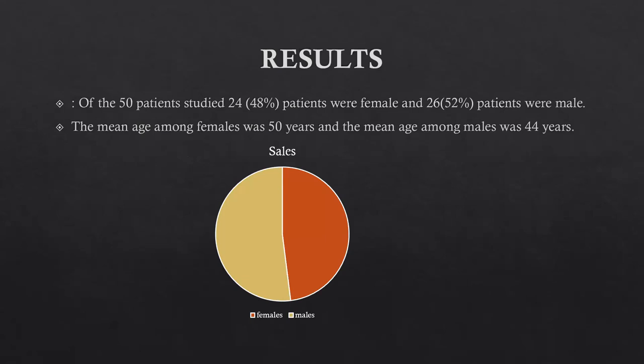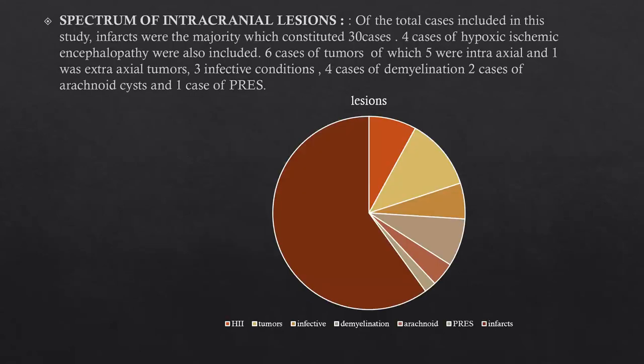Results. Of 50 patients studied, 24 patients (48%) were female and 26 (52%) were male. The mean age among females was 50 years and the mean age among males was 44 years. Spectrum of intracranial lesions: infarcts were the majority, constituting 30 cases; four cases of hypoxic ischemic encephalopathy; six cases of tumors (five intraaxial and one extraaxial); three infective conditions; four cases of demyelination; two cases of arachnoid cysts; and one case of PRES.